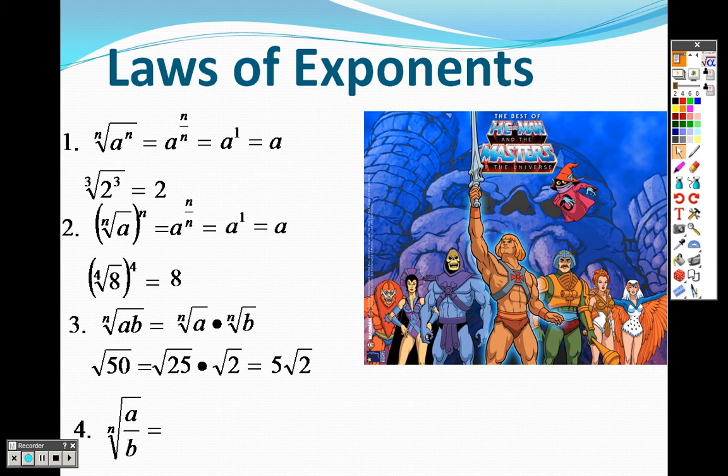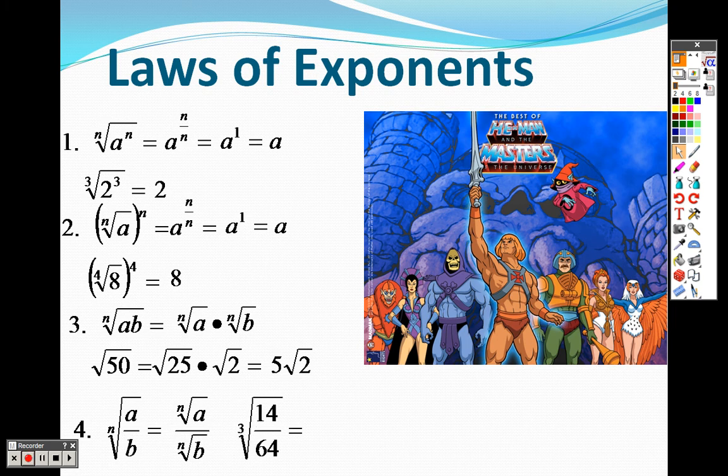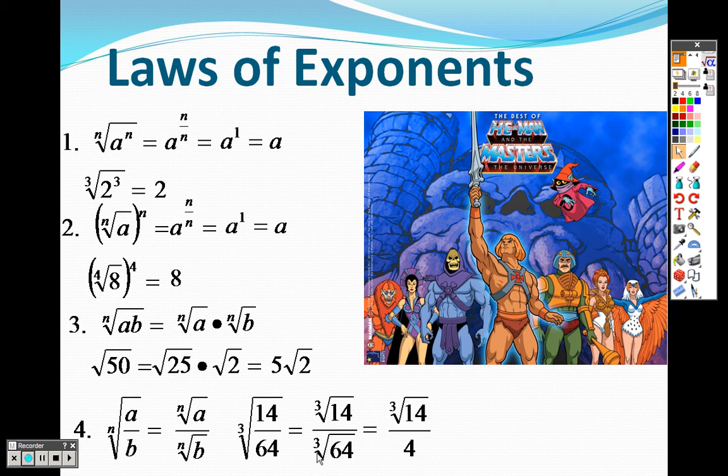The nth root of a over b—if I can multiply them and split them up, then the assumption would also be I can divide them and split it up, so I get the nth root of a over the nth root of b. This example is the cube root of 14 over the cube root of 64.